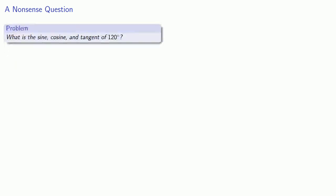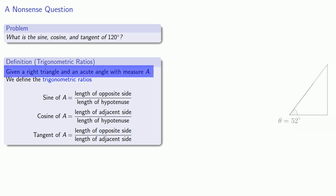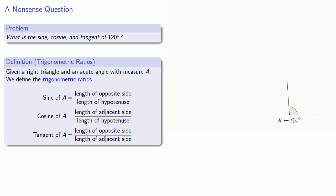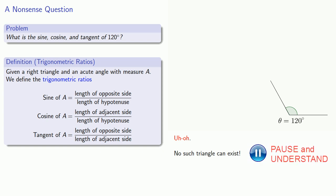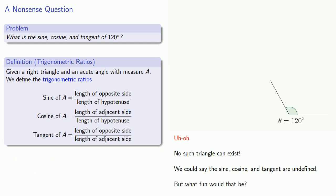For example, what is the sine, cosine, and tangent of 120 degrees? If we pull in our definition, we'd want to start with a right triangle where one angle has a measure of 120 degrees — and there's a problem here: no such triangle can exist. And so we might say that the sine, cosine, and tangent are undefined.